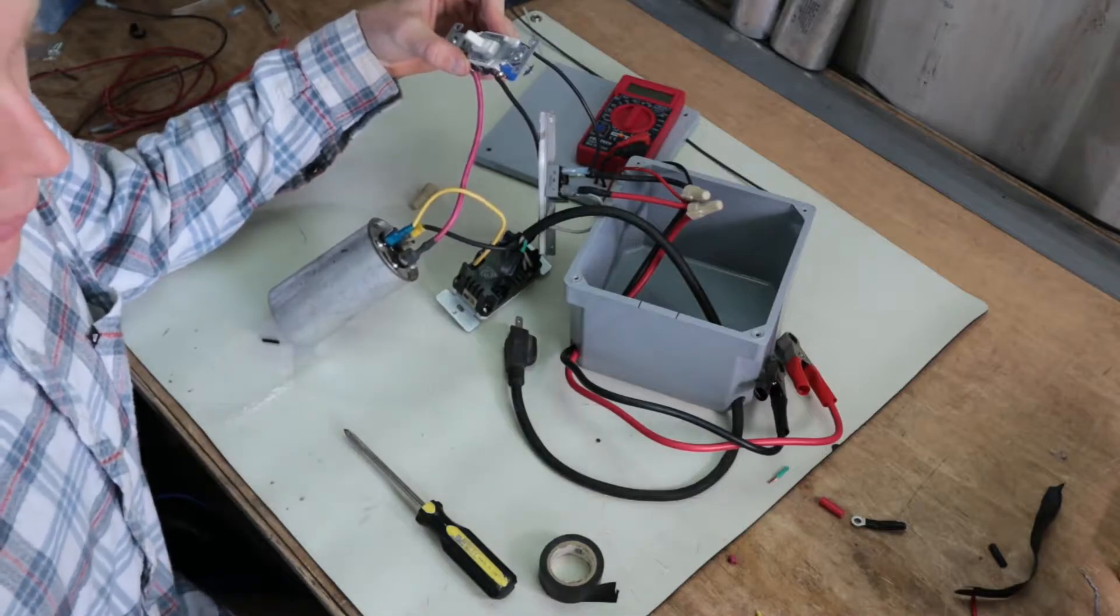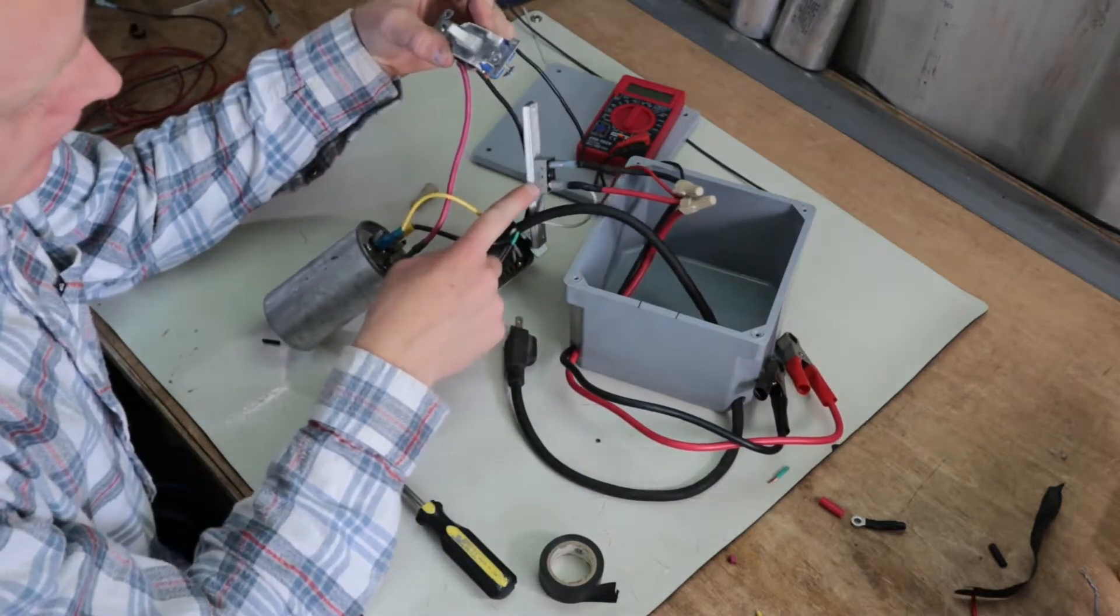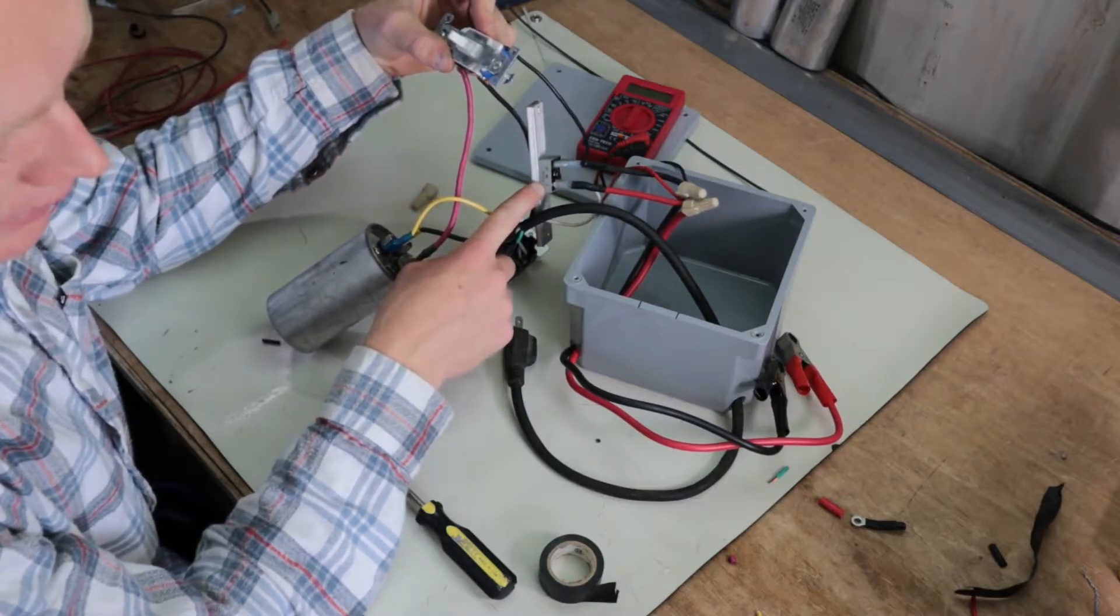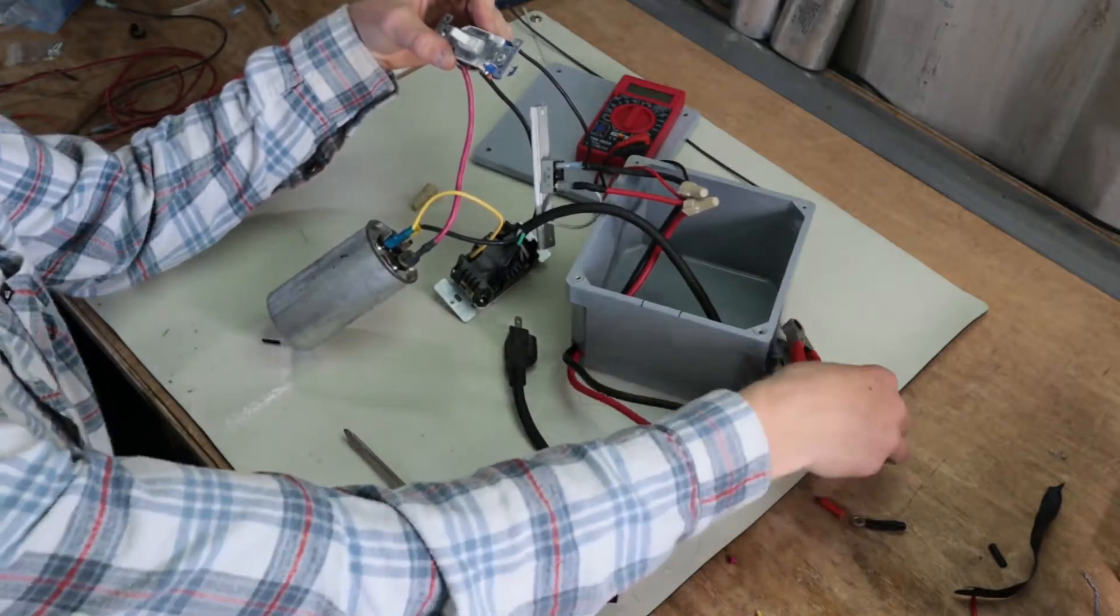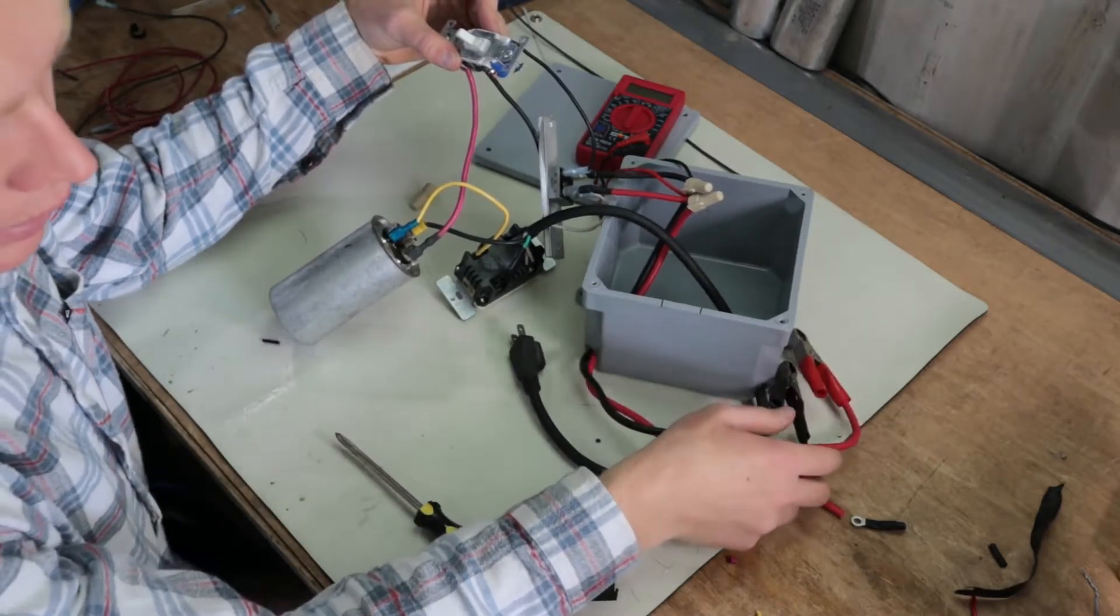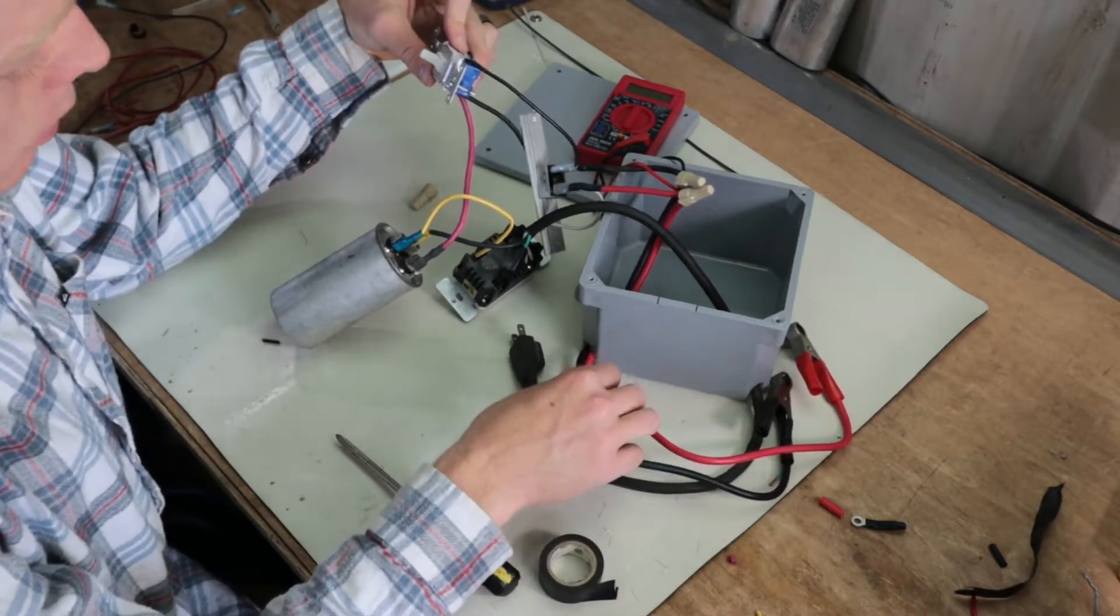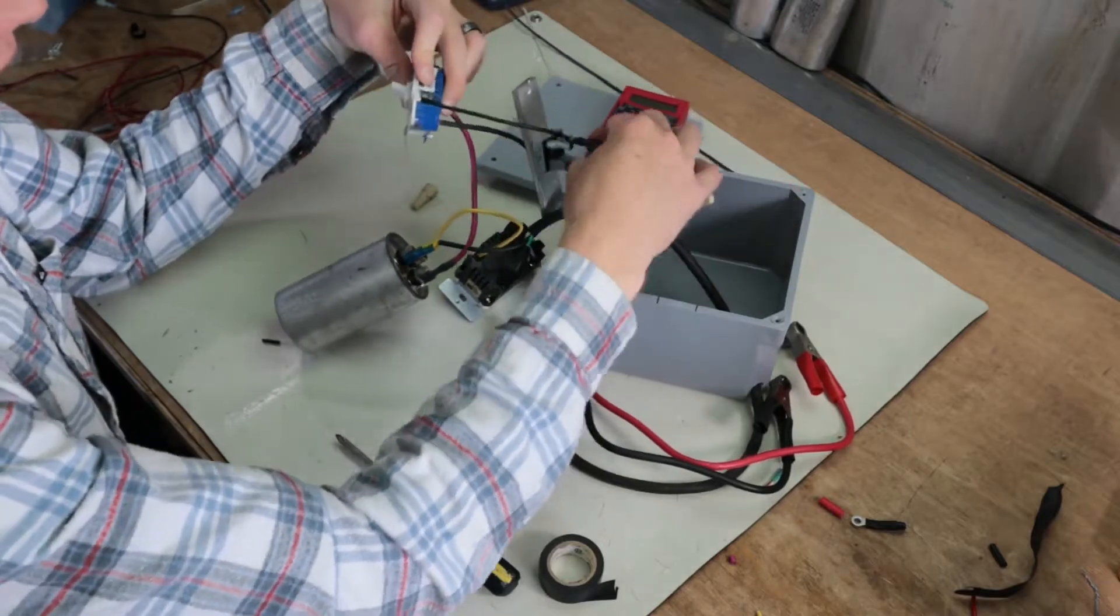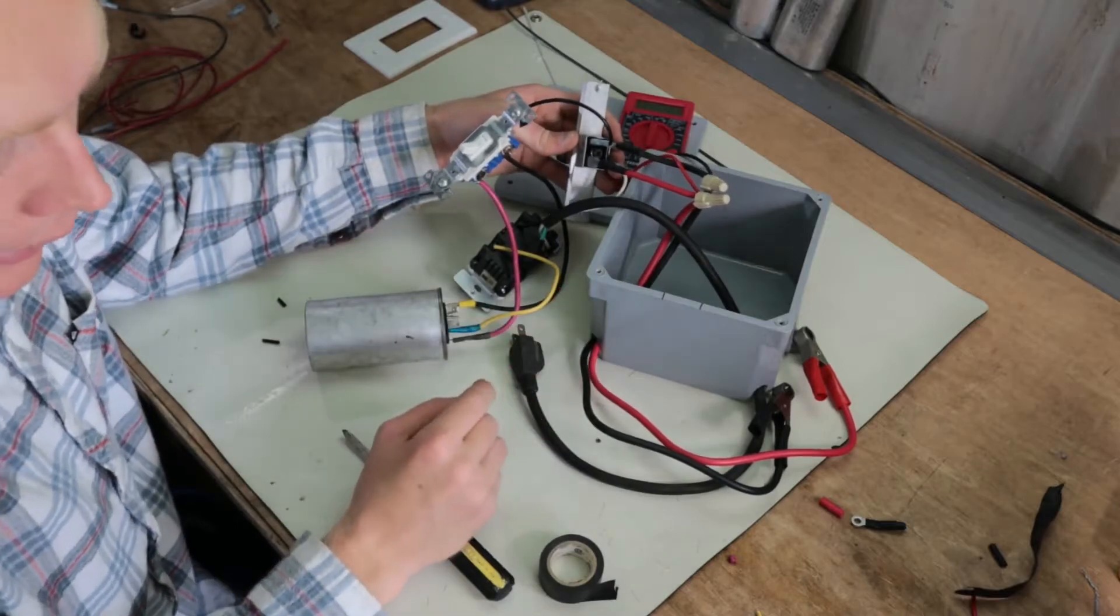And then from the bridge rectifier, directly across from the center lead, we have the positive. And you can see there, there it is right there. Positive is going to be going directly out to where the battery is, which will connect to this guy. And then our negative lead is just going to be coming from a different point, a different point from the bridge rectifier, which is right here. It's going to be diagonal from the positive. And you can see that's wired up correctly right there.